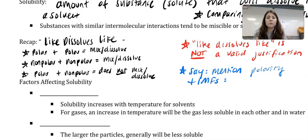What you need to say is you need to mention polarity and IMFs. When we indicate the IMFs present, let's say two polar things have LDFs and dipole-dipole forces, they have similar interactions. If you had polar and nonpolar, well polar has LDFs and dipole-dipole forces while nonpolar just has LDFs. Even though they have the LDFs that are similar, the fact that your polar molecule has even stronger IMFs of dipole-dipole, they are not going to mix because they're not similar.